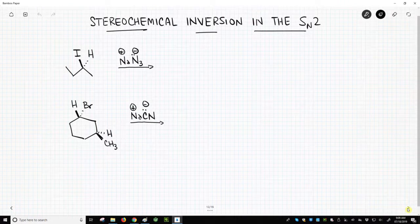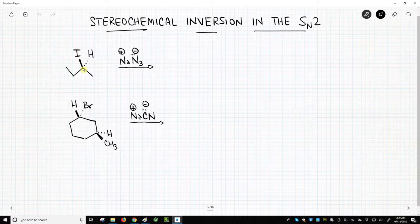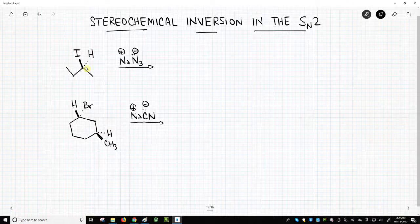So we'll do two examples. First example is this iodide, this carbon has four different substituents. It is a stereocenter.